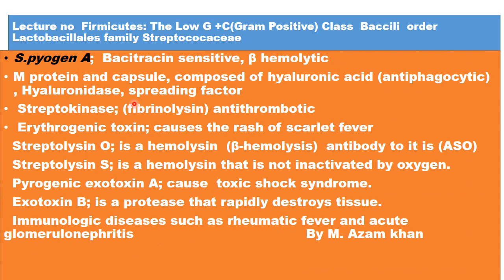Streptococcus pyogenes, according to Lancefield classification, is Group A. It is bacitracin sensitive and beta hemolytic. An important characteristic is that it possesses M protein and a capsule composed of hyaluronic acid. The M protein and capsule are anti-phagocytic. It also possesses hyaluronidase — a spreading factor — which dissolves hyaluronic acid in joints and bones, facilitating spread.